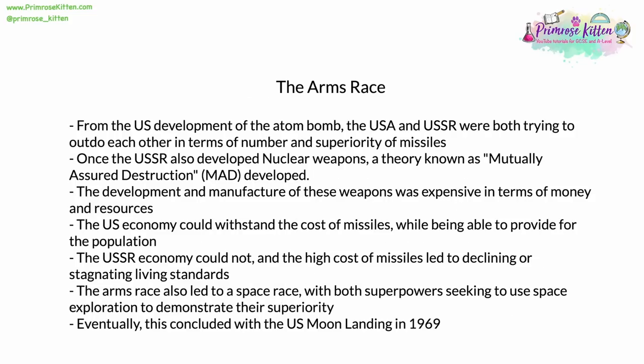From the time of the US development and deployment of the atom bomb, the USA and USSR were both trying to outdo each other in terms of both the number and superiority of weapons, especially nuclear missiles. Once the USSR had developed nuclear weapons, a theory known as Mutually Assured Destruction, or MAD, was quickly developed — the idea that no single power would start a nuclear war because the subsequent retaliation would be sure to destroy them. The development of these weapons was expensive in terms of raw resources and money. The US economy, which grew spectacularly after 1945, could withstand the cost while providing for the basic needs of its population. The economy of the USSR could not — the high cost of missiles and high military investment generally led to declining or stagnating living standards. The arms race also led to a space race, with both superpowers seeking to use space exploration to demonstrate their superiority and possibly gain a military advantage. The space race eventually concluded with the US moon landings in 1969, after which the USSR were forced to admit they had lost that particular battle.